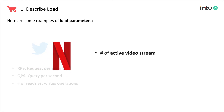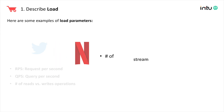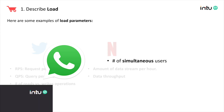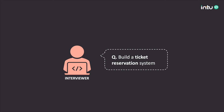Another example is a video streaming application like Netflix. Their main service is to provide video streams to users, so they're interested in how performance changes as the number of active video stream connections increases. If you want to build an application like Messenger or WhatsApp, you might be interested in how performance changes with respect to the number of simultaneous users in a chatroom. Here's a quick question for you: if you're given an interview question to build a ticket reservation system, what would be your load parameter?